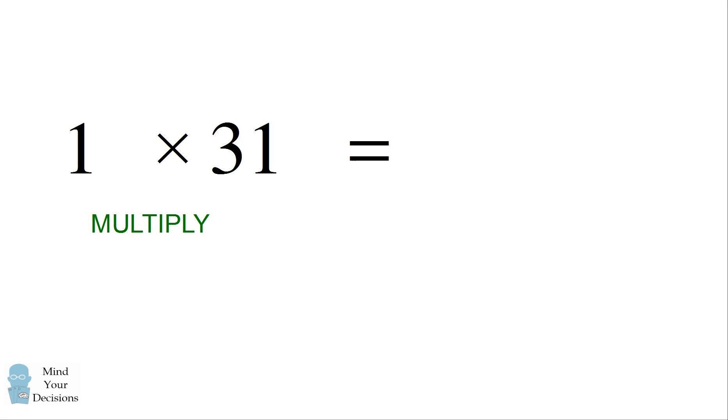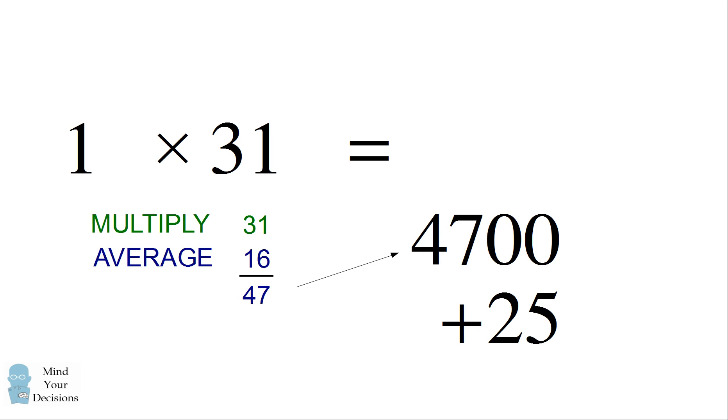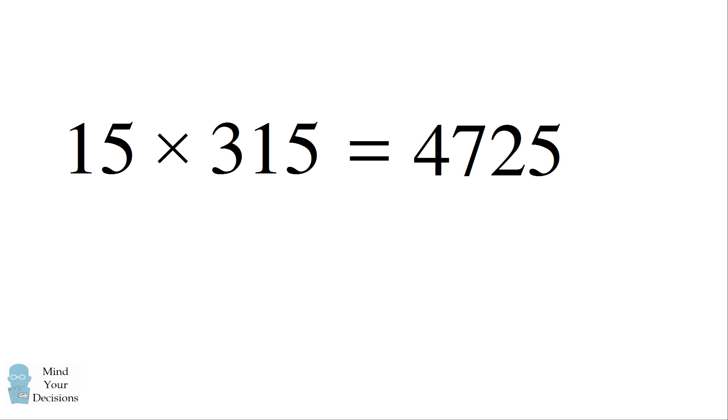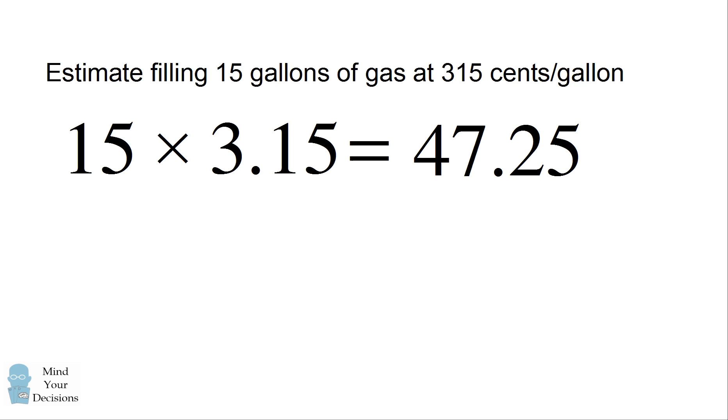We cover up the 5. Then we take the product of 1 and 31, which is 31. We take the average, which is 16. We add these together. And then we multiply by 100 and add 25. So we get that 15 times 315 is 4725. If we convert this back into dollars, we get 15 times 3.15 is 47.25. Now we only wanted to fill, this is to estimate filling 15 gallons.